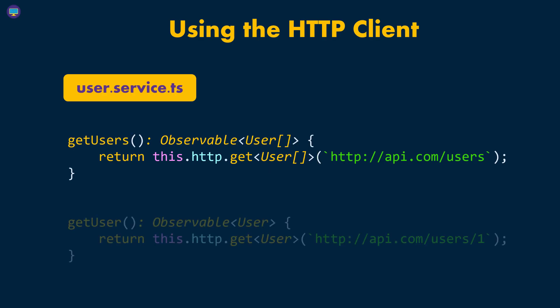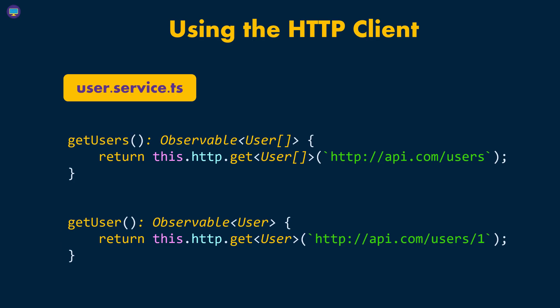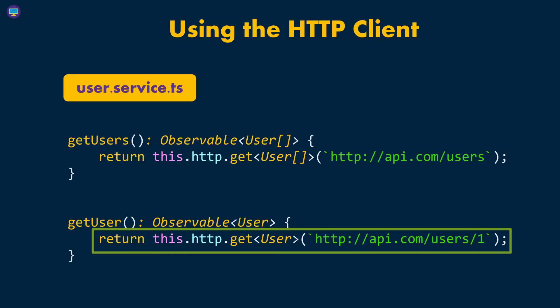Another example is if we're trying to get one user. In that case, we can define another function called getUser — it doesn't take any parameters — and the return type is also an Observable, because this code is not going to resolve immediately; it will take some time due to the network call. The response body is expected to be a single user. On the second line, we call get, pass in the type of data, and then pass in the URL where the data lives on that web service.